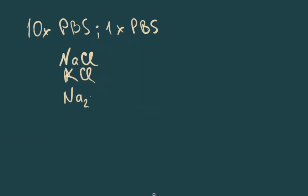Okay, let's say you need to prepare 10x PBS buffer and you know that 1x PBS contains sodium chloride, potassium chloride, sodium hydrophosphate, and potassium hydrophosphate.